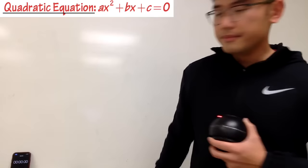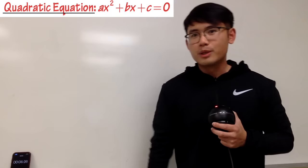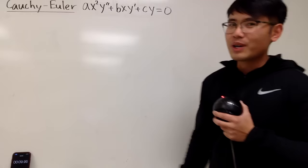As we all know, whenever we have x² + bx + c = 0, that's just a typical quadratic equation. But this right here has y double prime and y prime and y — this is called the Cauchy-Euler differential equation, also called the equidimensional differential equation. Today I'll show you how to solve this with all three cases.